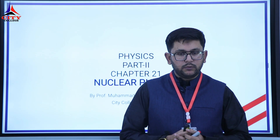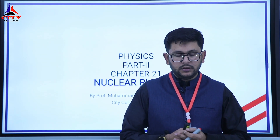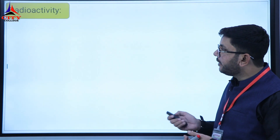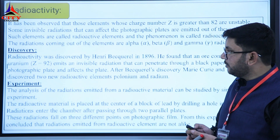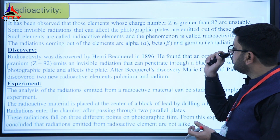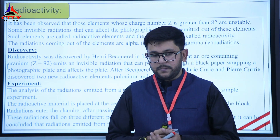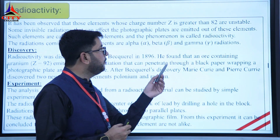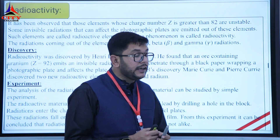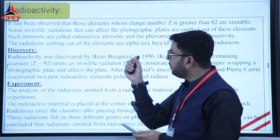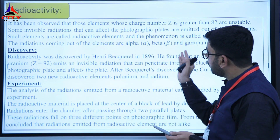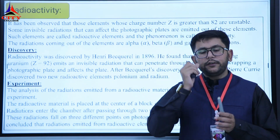Bismillahirrahmanirrahim, Assalamu Alaikum. I'm Kashi Fimran, your physics teacher. Our topic of discussion is radioactivity. It has been observed that those elements whose charge number is greater than 82 are unstable and emit invisible radiations that can affect photographic plates. Such elements are called radioactive elements.